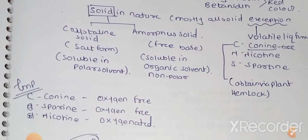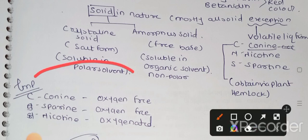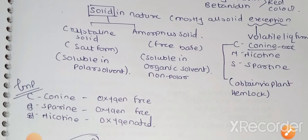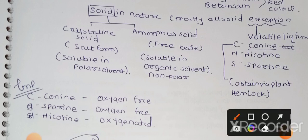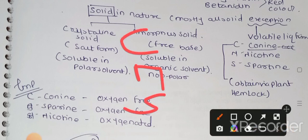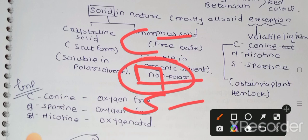It's very important for GPAT point of view that coniin is oxygen free, sparteine is also oxygen free, and nicotine is oxygenated. This came in last time's question also. So in CNS, you have to remember that coniin and sparteine are oxygen free, and nicotine is oxygenated.